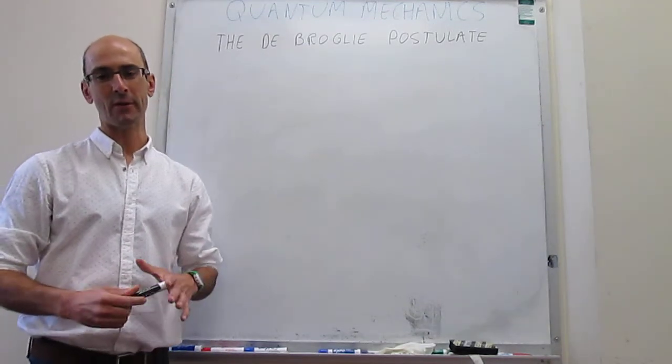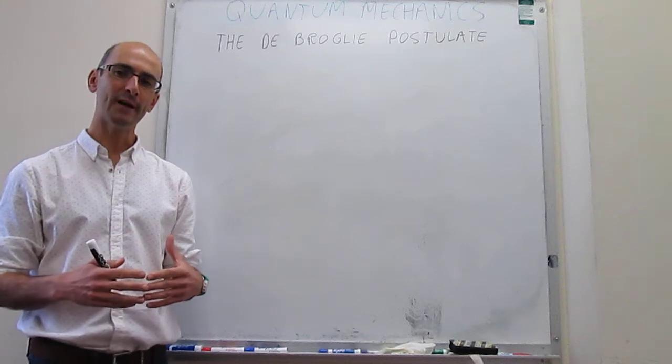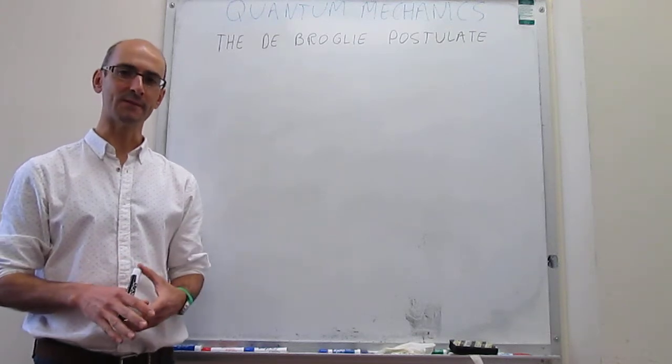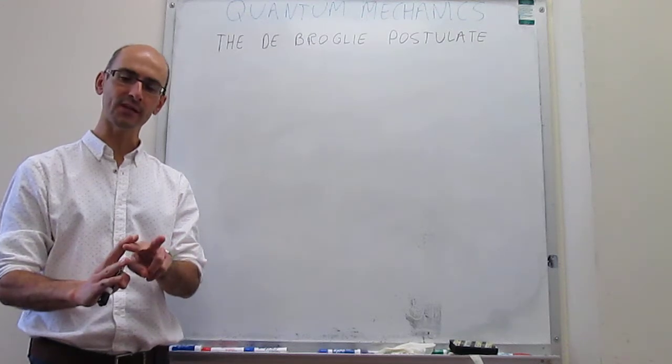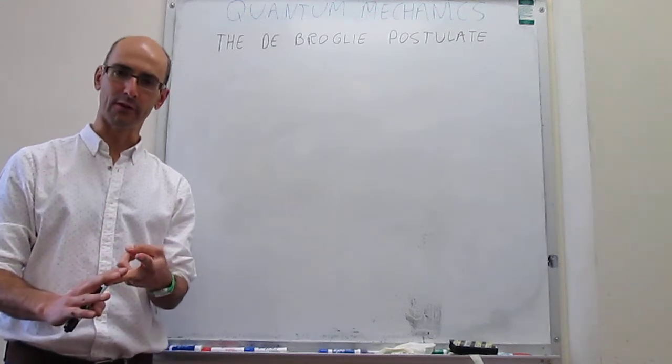This video introduces the De Broglie postulate. We're describing elementary concepts in quantum mechanics, and until now we have explained two effects: the blackbody radiation experiment and the photoelectric effect.